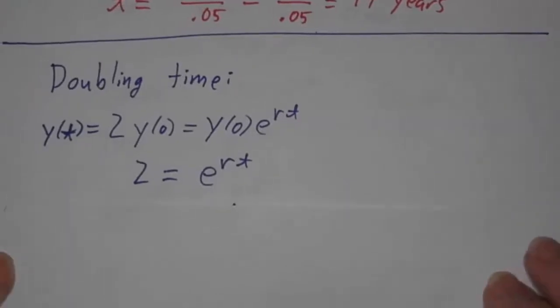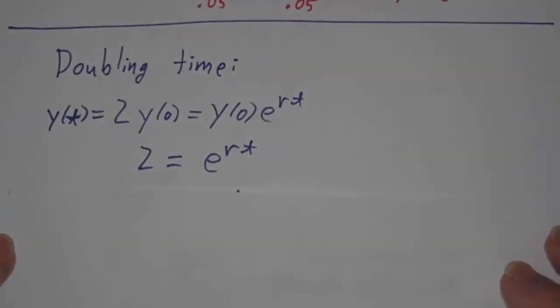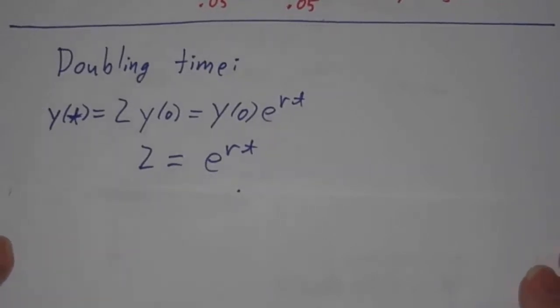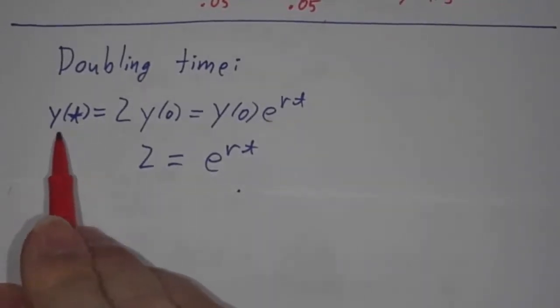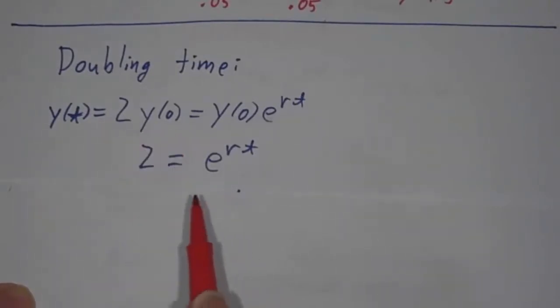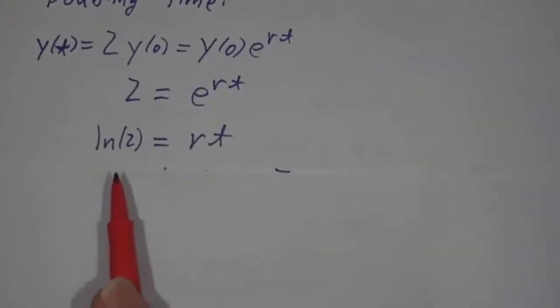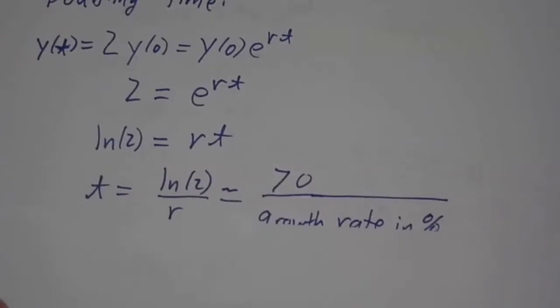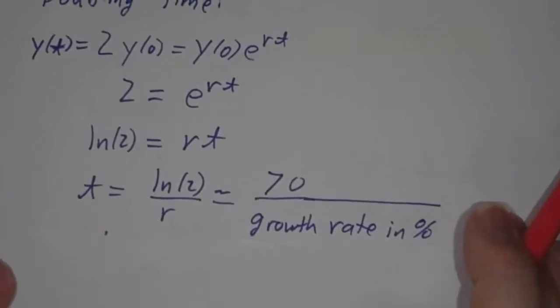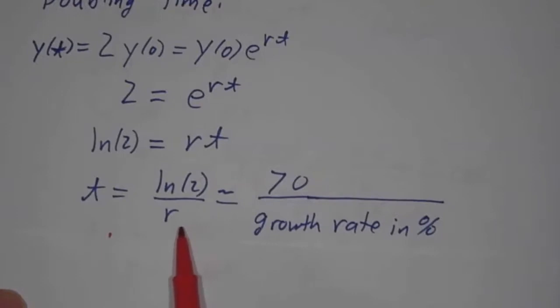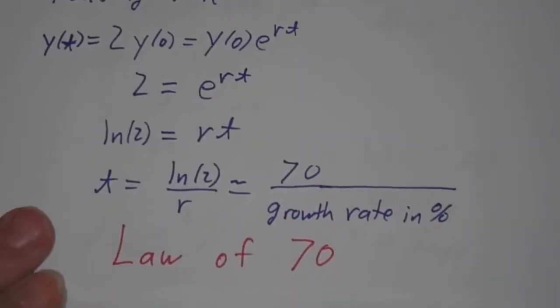And if you want to ask how long it takes to double, not just from 10,000 to 20,000, but maybe from 20 to 40 or 40 to 80, if you want the doubling time, you want to know when do you have twice what you started. So that means when is e to the rt equal to 2? rt is the natural log of 2. So the time it takes to double is always the natural log of 2 divided by r. And if you express these as percents, the natural log of 2 is about 70. The growth rate in percent is whatever it happens to be, in this problem was 5. So 70 divided by 5 is 14 years. This is called the law of 70.